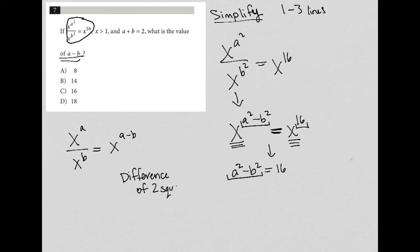And definitely, if you don't know how to do the difference of two squares, please go look that up as well. So a squared minus b squared becomes a minus b times a plus b equals 16.